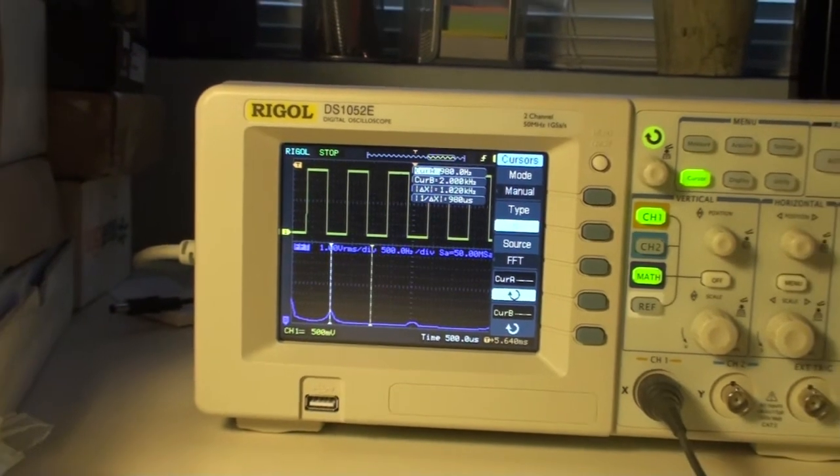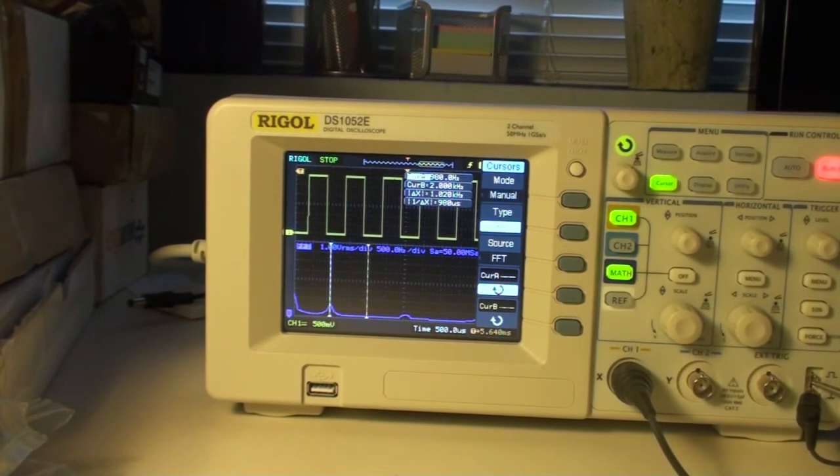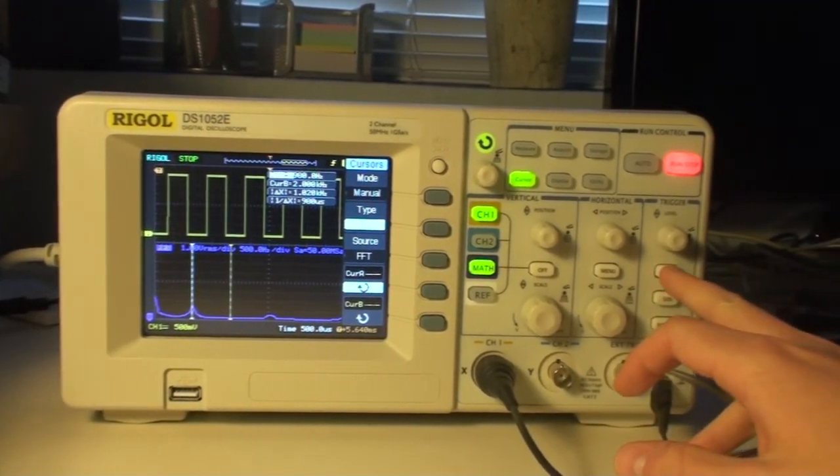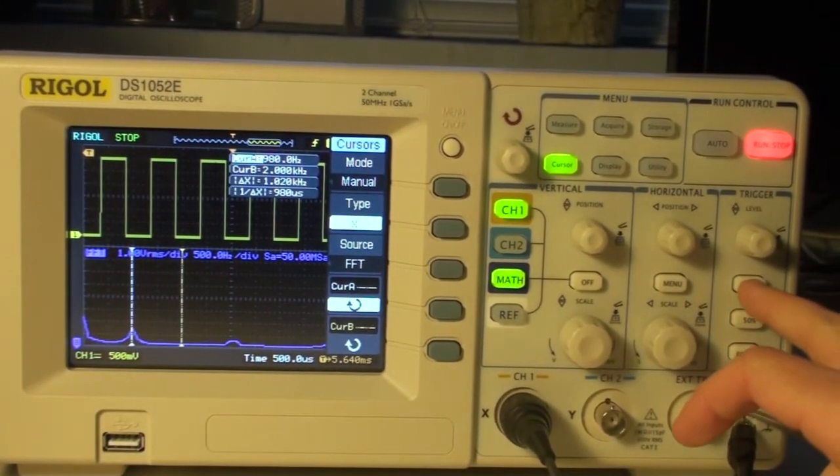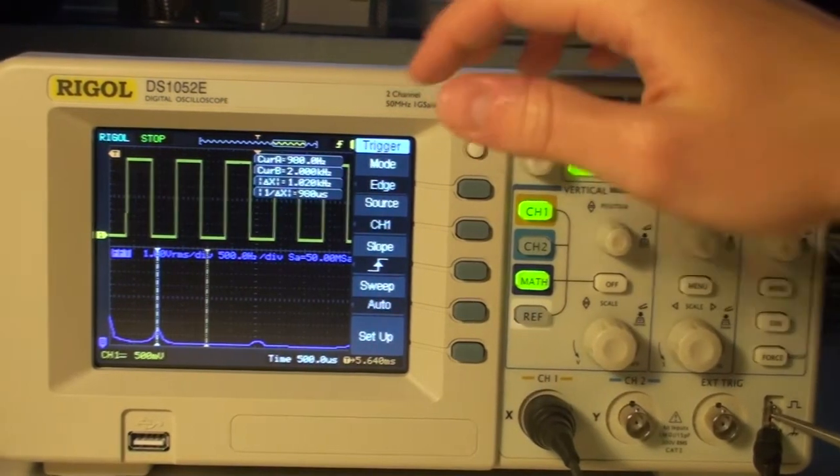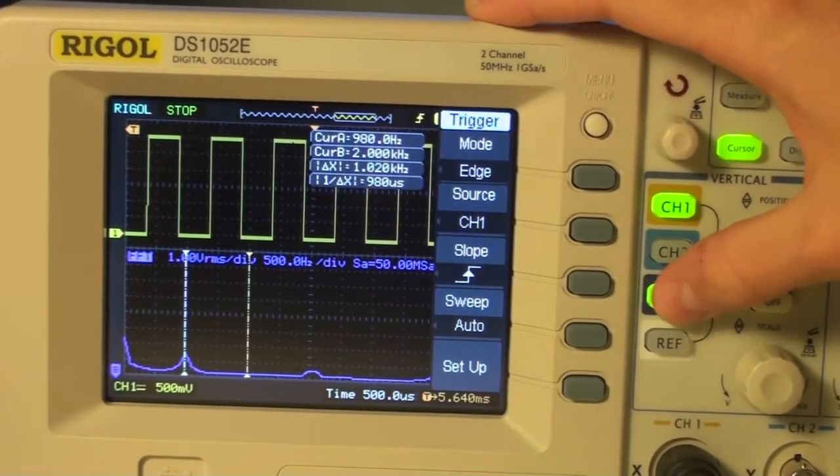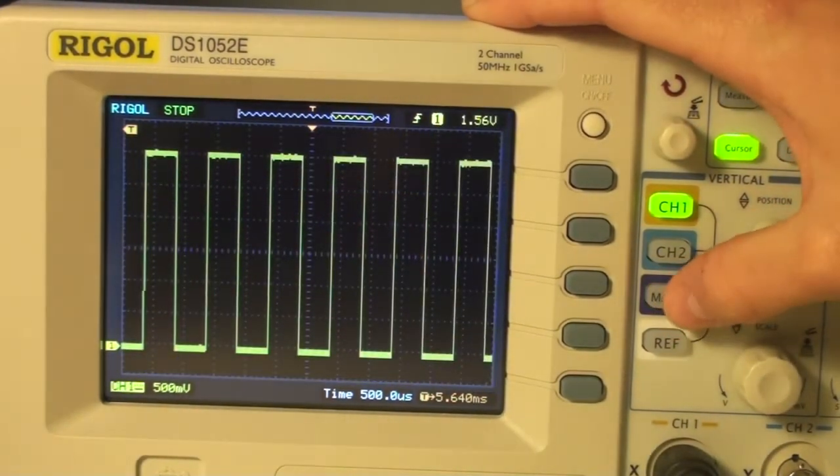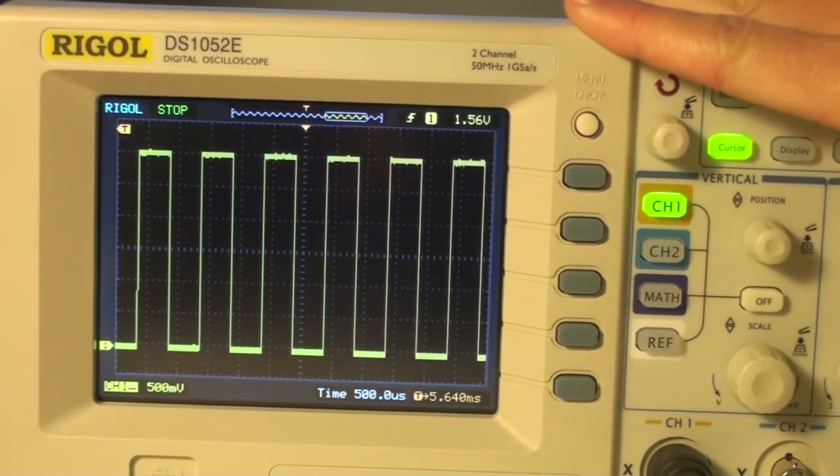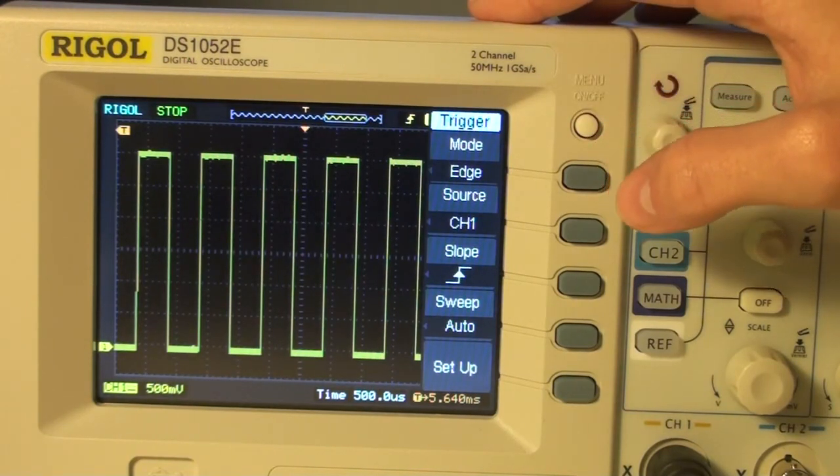As a last thing, I would like to show you the trigger function, which is over here. When this is pressed, we get a menu which shows us the trigger function we can enable. For now I'll disable the FFT, and then if we press the trigger again, you'll see that we have different possibilities, functions to enable.